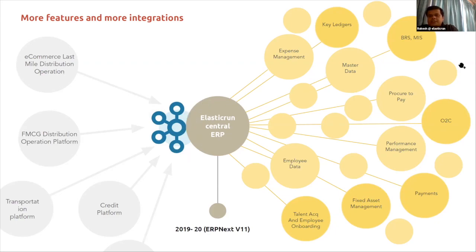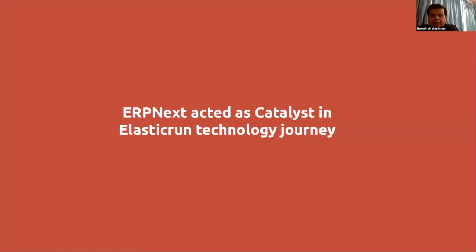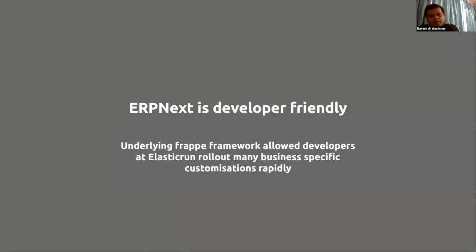This is how our journey went from 2016 to the current year, and we are still going further. We continue to enable features — checking if they exist in ERPNext, and if not, building them as custom features. If customization is required, we do minor customization. ERPNext has acted as a catalyst in the whole Elastic Run technology journey, sitting at the very core as our corporate ERP. It's very developer-friendly, and the underlying Frappe framework allowed our developers to roll out business-specific customizations.